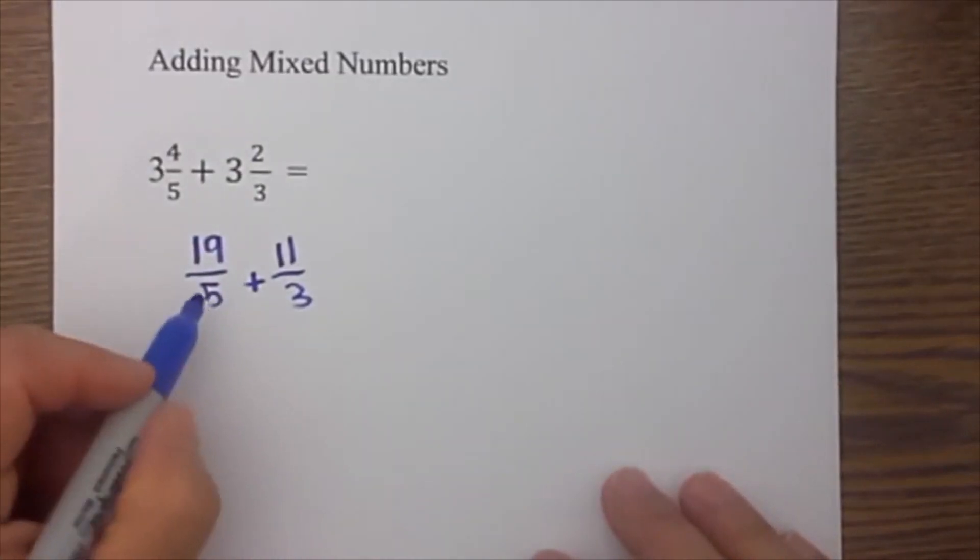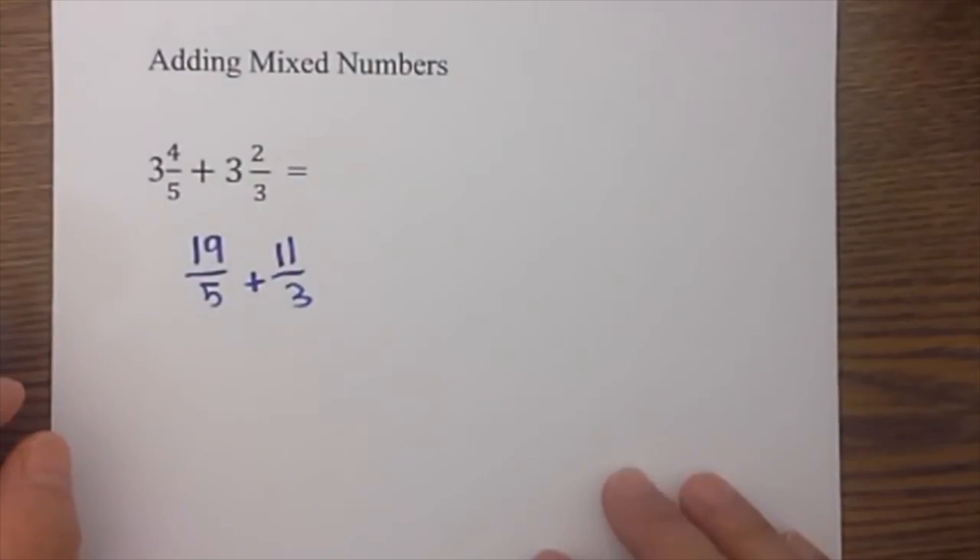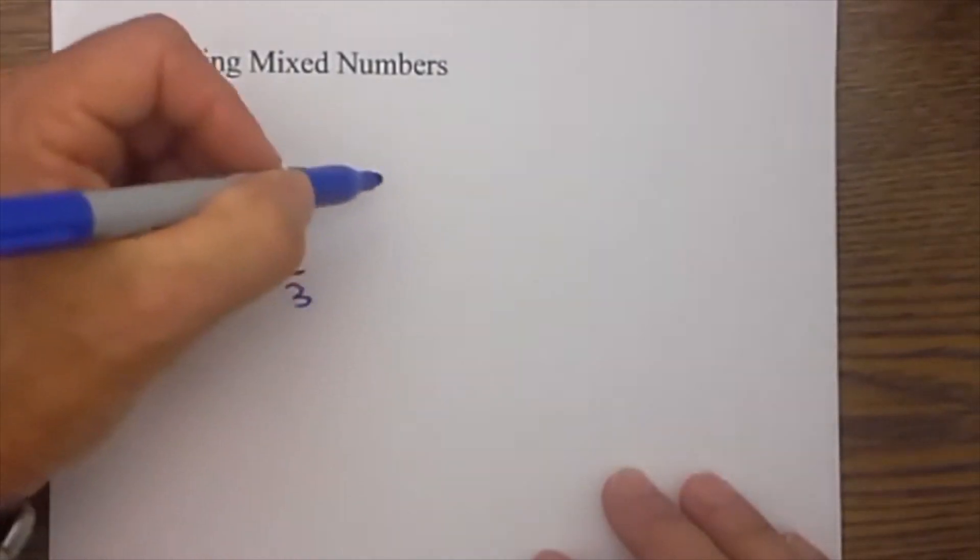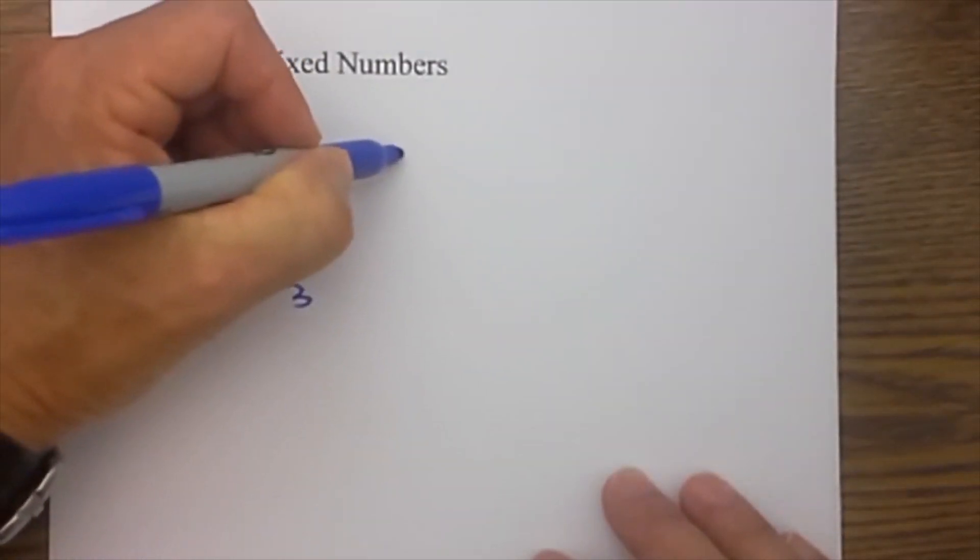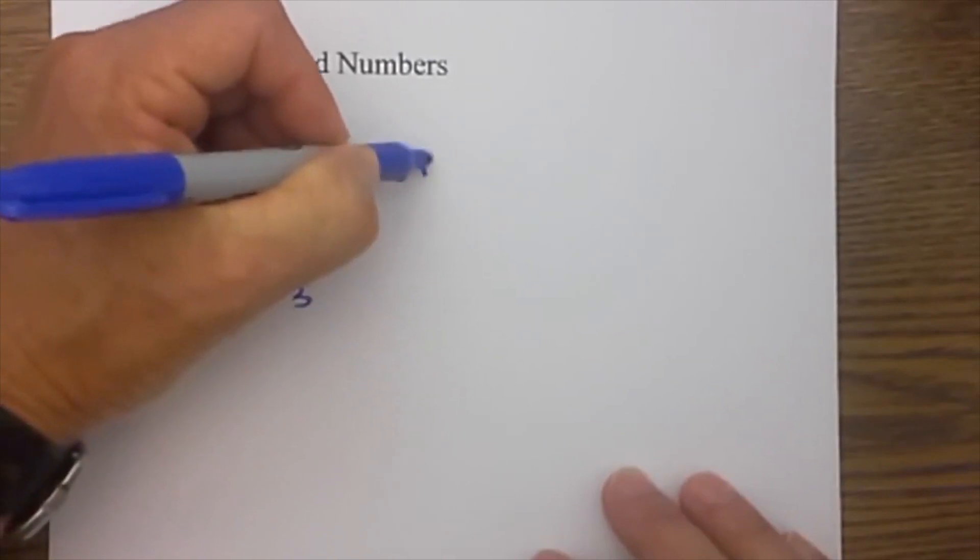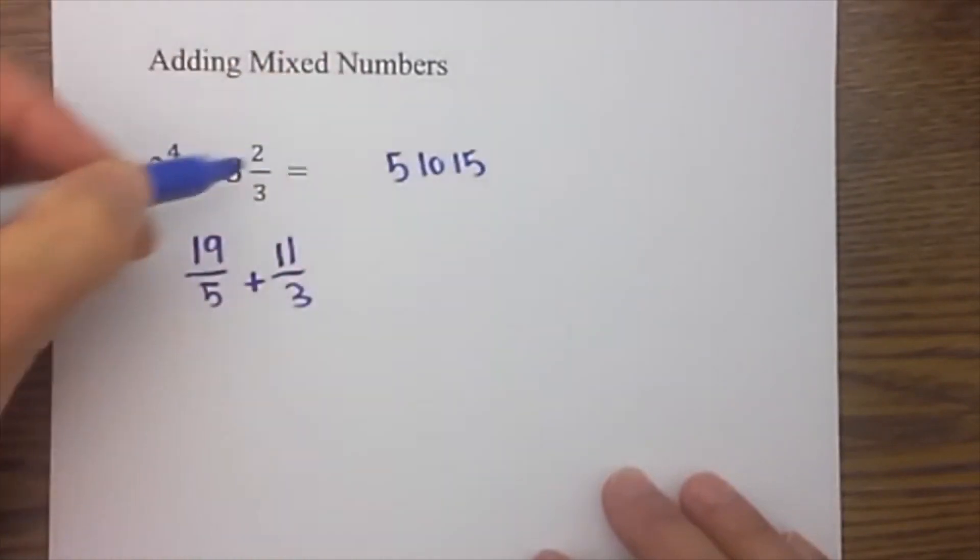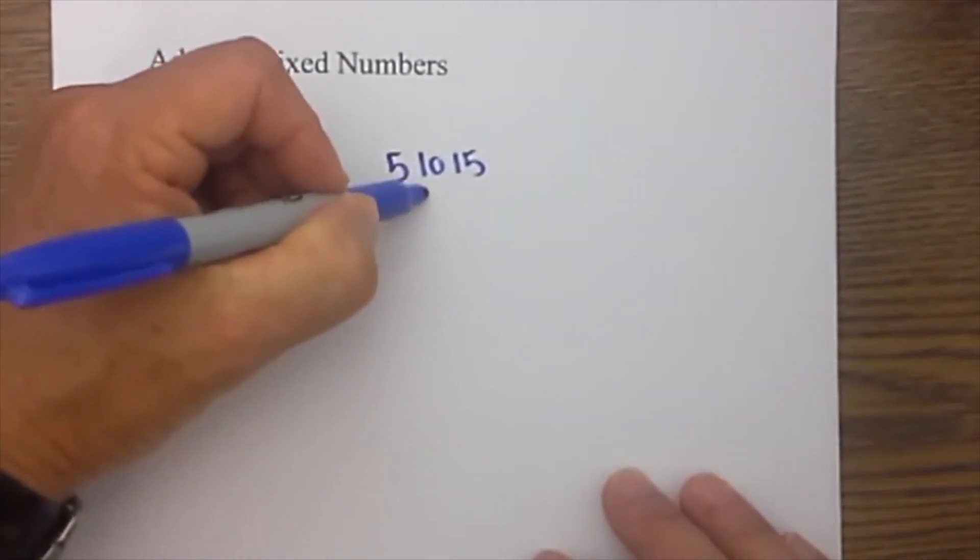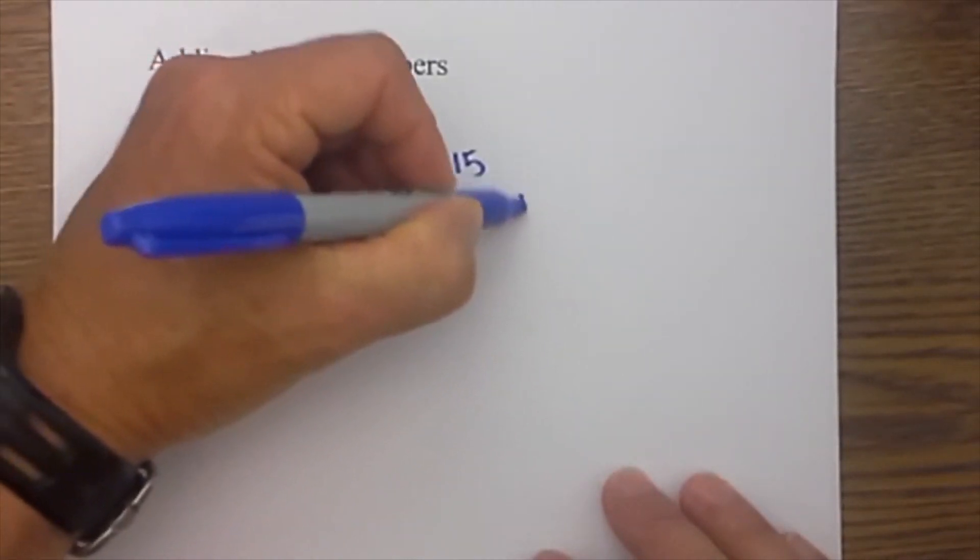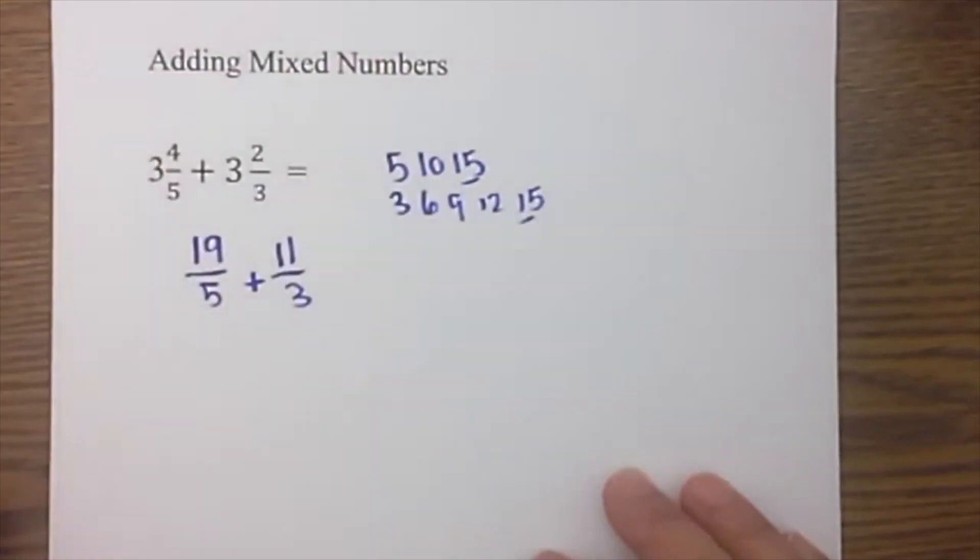Now at this time I know I cannot add them because we do not have a common denominator. So I will find the lowest common denominator using a multiplication method. I'll multiply 5 times 2 which is 10 times 3 which is 15. So 15 is common, so that will be my lowest common denominator.